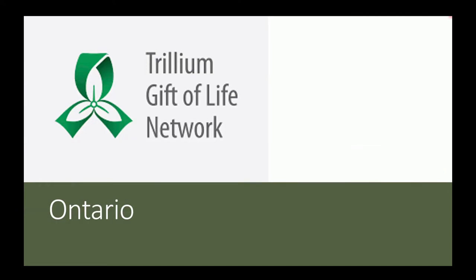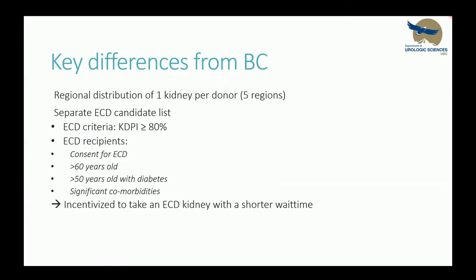Now let's talk briefly about Ontario, which does more absolute transplants than BC. Key differences from BC include regional distribution: they break organ distribution into five regions, with one kidney staying regional and the other going Ontario-wide or toward the national HSP pool. They also have a separate candidate list for ECD donors using a KDPI system. Recipients need to be older or have significant comorbidities and must consent for ECD. Because it's a separate list, patients are incentivized to take an ECD kidney because they get a shorter wait time — different from BC, where our wait times are already short.